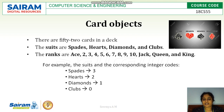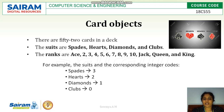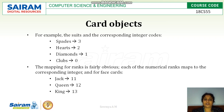Each suit has ranks from Ace, 2 through 10, Jack, Queen, and King. Ace can have the greatest or lowest value depending on the game you are playing. For example, the suits and their corresponding integer codes are: Spades with value 3, Hearts with 2, Diamonds with 1, and Clubs with 0. So a Spade Jack is represented as (3, 11).